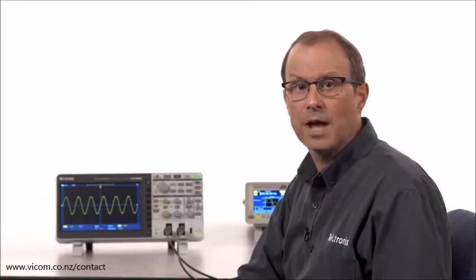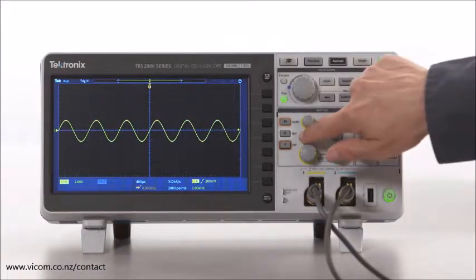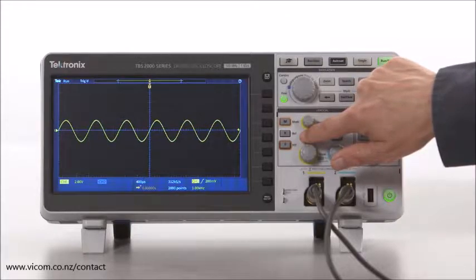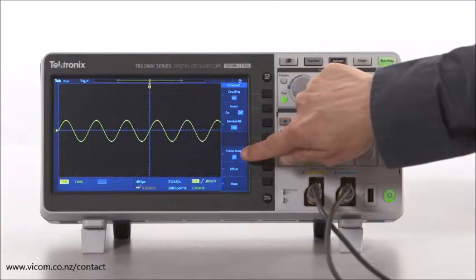These tips will help whether you're measuring by eye or using the automatic measurements on the scope. To make sure you're taking the best measurements you can, make sure the probe attenuation on the scope is set correctly for the probe you're using.